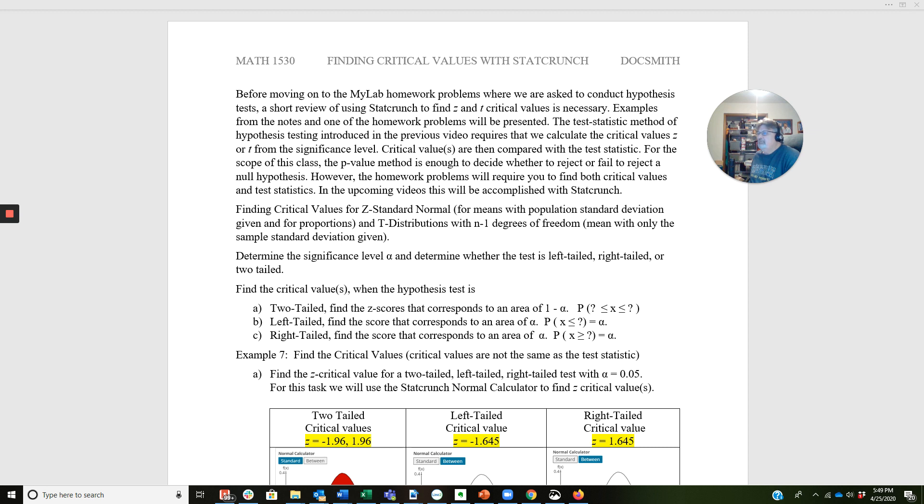So we're finding critical values for the Z standard normal distribution, that's for means with the population standard deviation given or for proportions, and the T distribution with N minus one degrees of freedom, that's for a mean with only a sample standard deviation given. First we determine the significance level and determine whether the test is left-tailed, right-tailed, or two-tailed. They're going to tell you in the problem what those significance levels are.